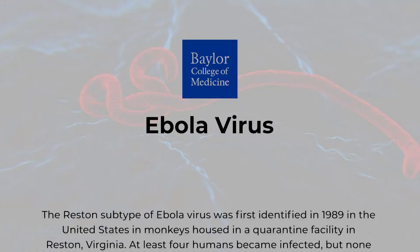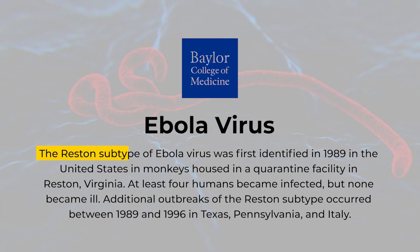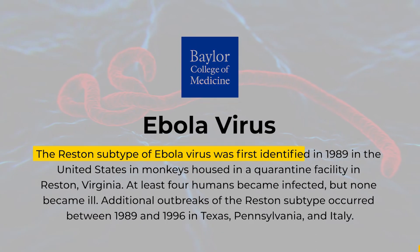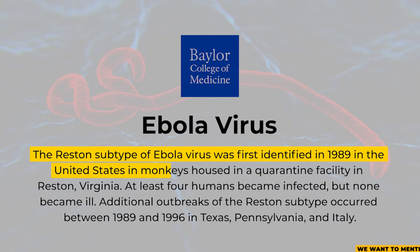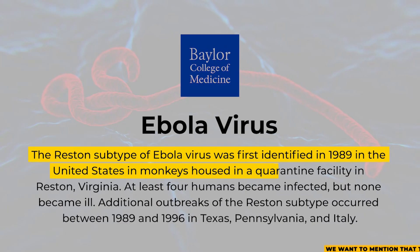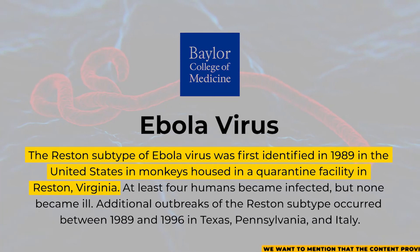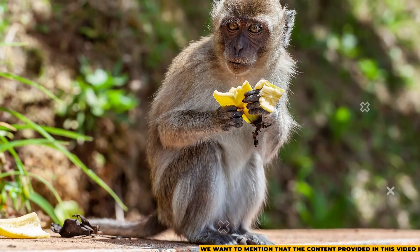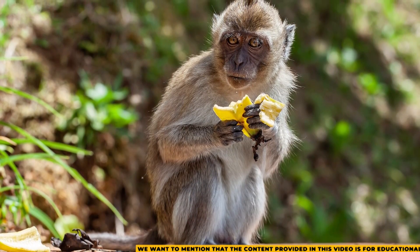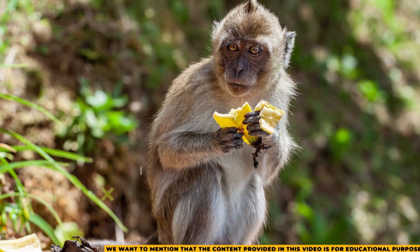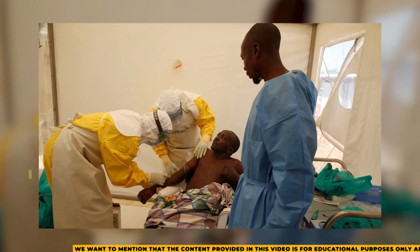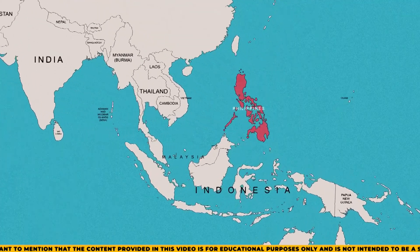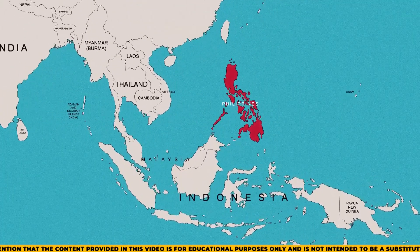The fourth Ebola species, called the Reston virus, was first identified in 1989 in a monkey quarantine facility in Virginia, USA. It caused a deadly outbreak in macaques imported from the Philippines. Similar incidents occurred in the following years, until the Philippine facility was shut down.